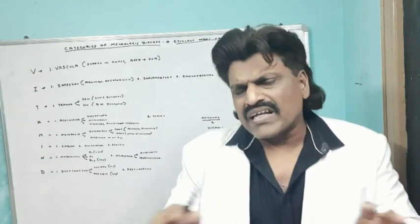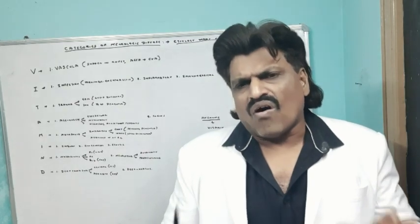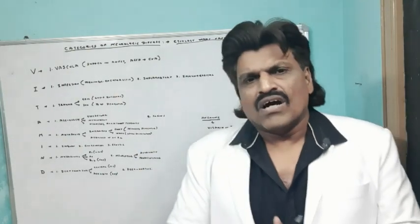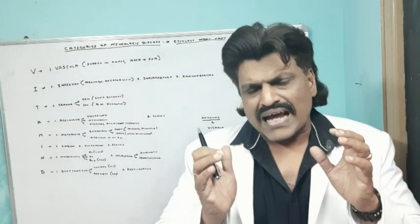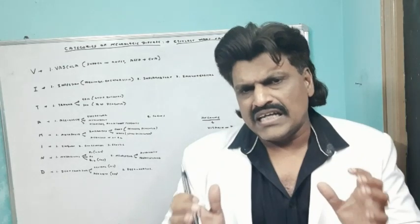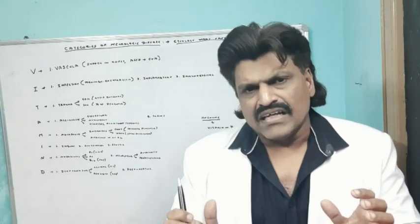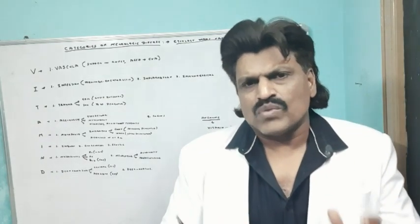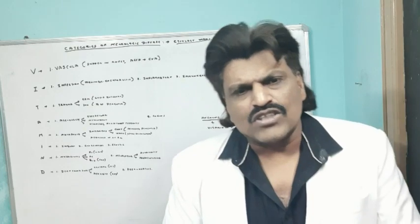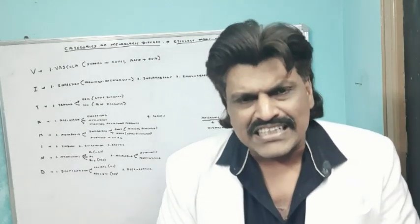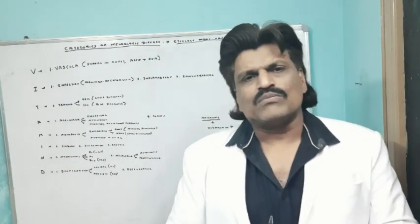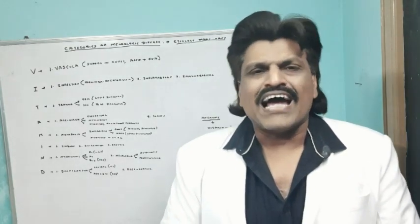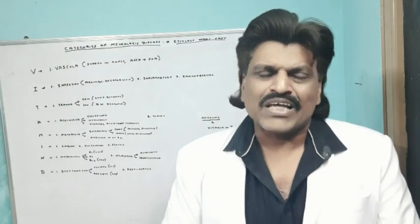So almost all categories of neurological disorders will fit into one of these major groups. If we remember the acronym VITAMIN D — V, I, T, A, M, I, N, D — we can remember all the different categories of diseases affecting the nervous system. I hope you enjoyed this lecture. Please like and subscribe to my YouTube channel Dr. Srinivas Medical Concepts and my Facebook page Dr. Srinivas Concepts. Thank you, bye.